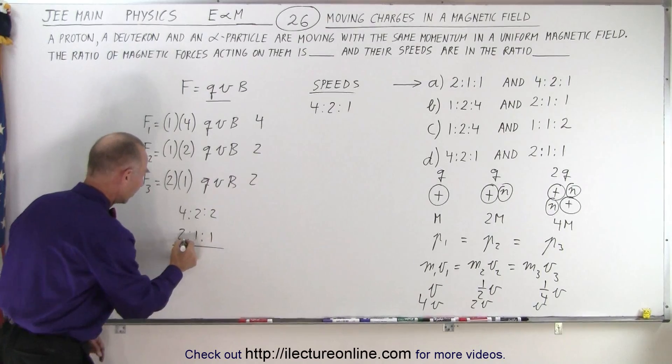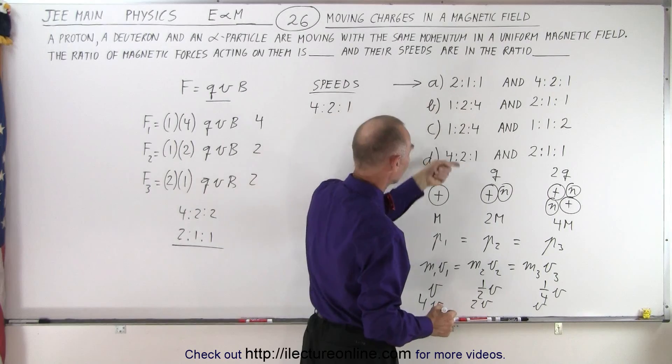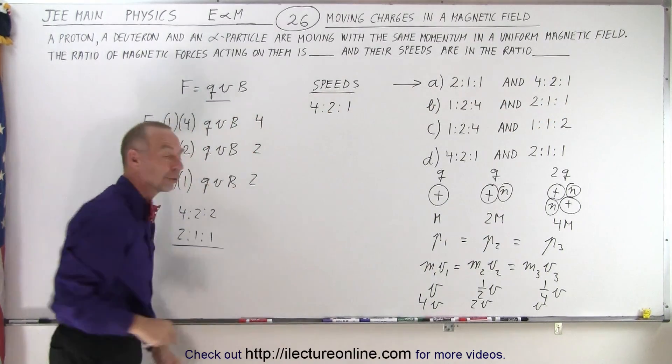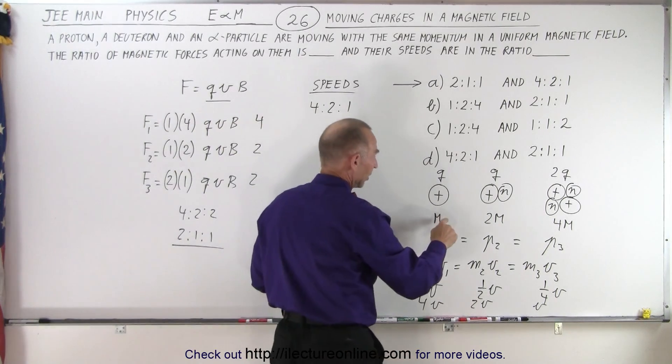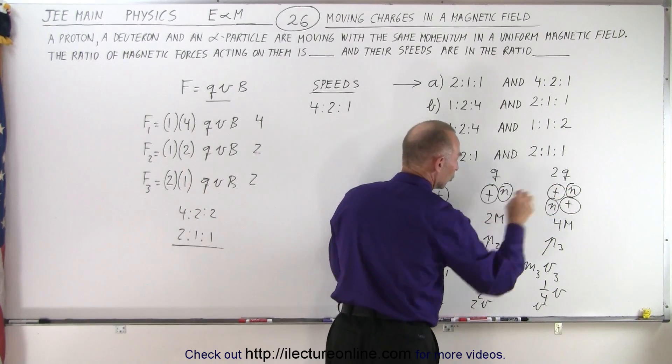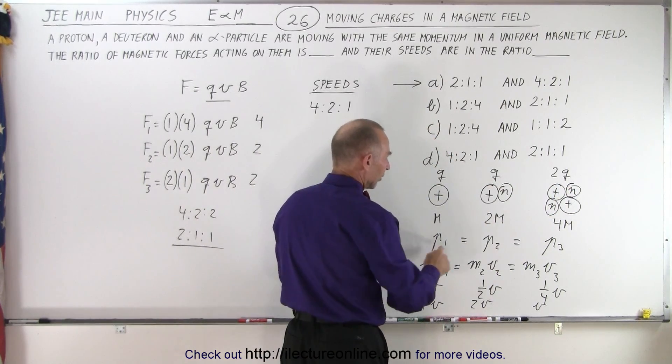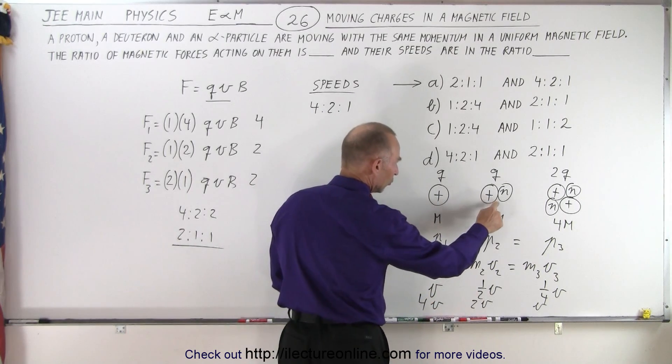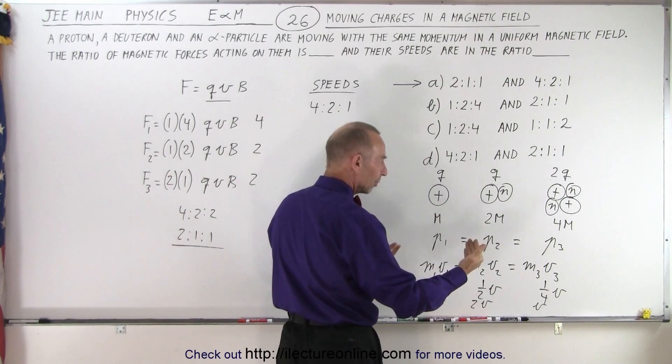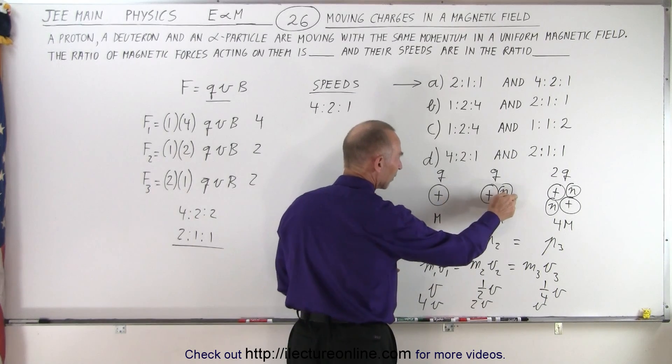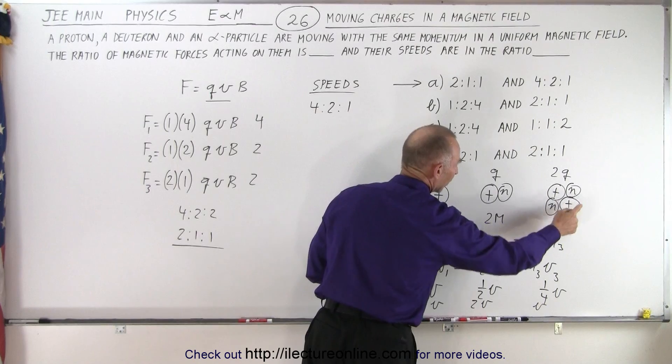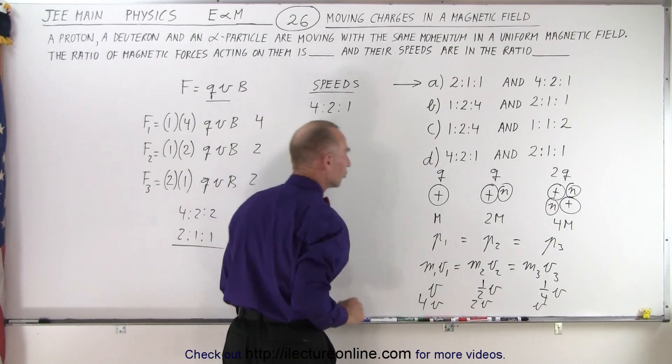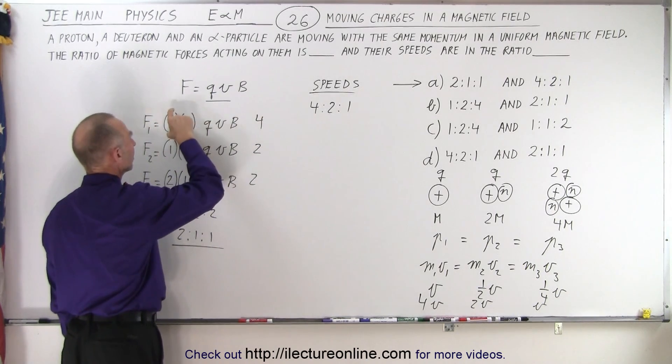Now notice 2, 1, 1 is indeed the ratio of the forces belonging to answer A, and I don't have that anywhere else. So for both the ratio of the forces and the ratio of the speeds, I can see that I got both ratios simply by going through the process. So again, to find the relative masses, 1 mass, 2 masses, 4 masses, because there's 1, 2, and 4 nuclear particles. So notice that the momentum must be the same for all 3, which means that the m times v must be the same, and the mass here is 1, 2, and 4, which means that the velocity must be 4 times the velocity, twice the velocity, and 1 quarter of the velocity, so we have v, 1 half v, 1 quarter v, multiplying everything by 4, 4v, 2v, 1v, and so we get the ratios of their speeds.